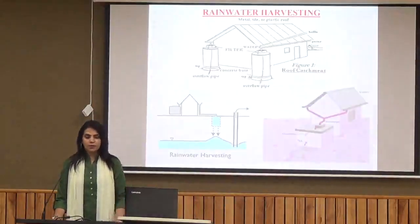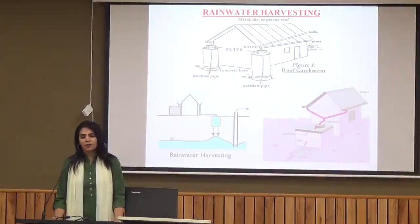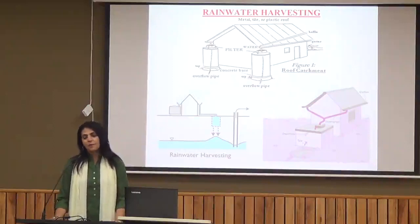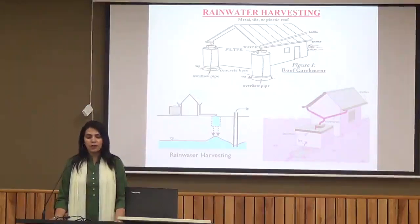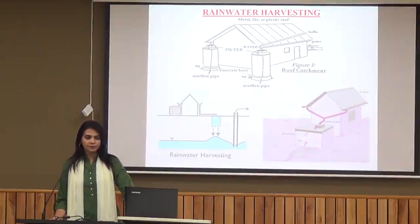This diagram shows how rainwater harvesting can be done. It shows a metal tile or plastic roof where water is collected, with filter units inserted. There is a roof catchment, and the rainwater goes down and is captured, slowly seeping into the ground.